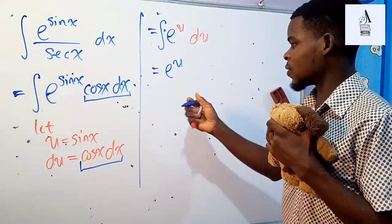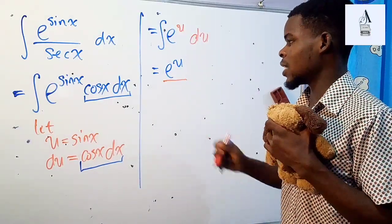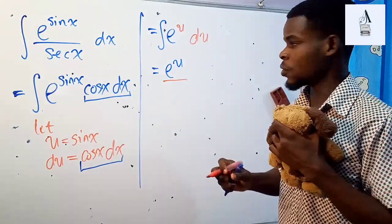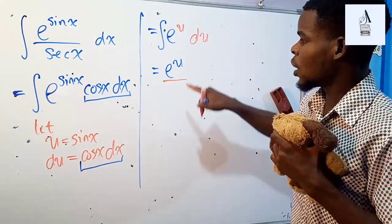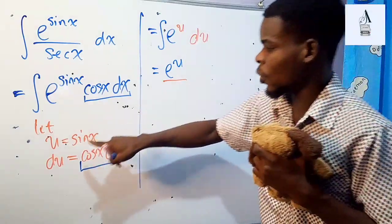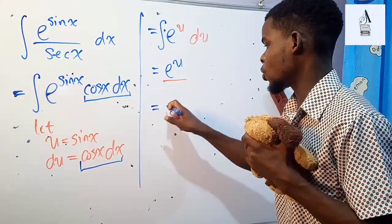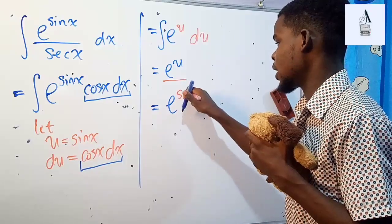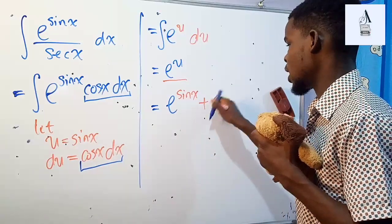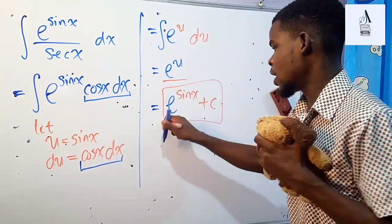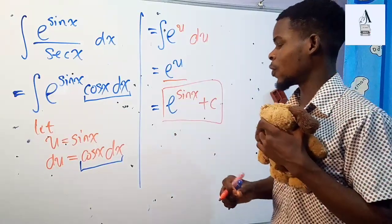And here it's nice because we've just integrated that. But then we need to get back to the original variable. So since u is the same thing as sine of x, in place of u over here, we are going to put in sine of x. So this will become e to power sine x. And we are done. We just add an arbitrary constant, and this right here is the antiderivative of the function over there.